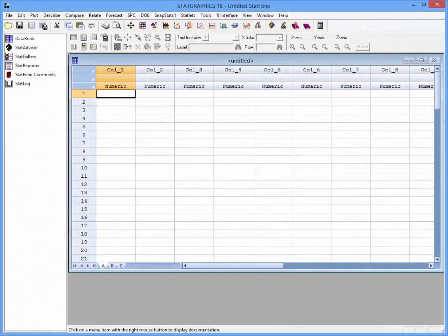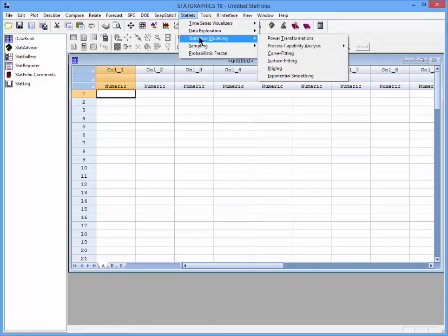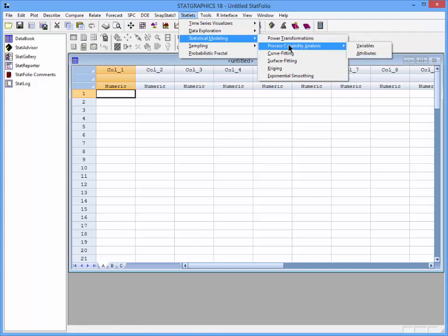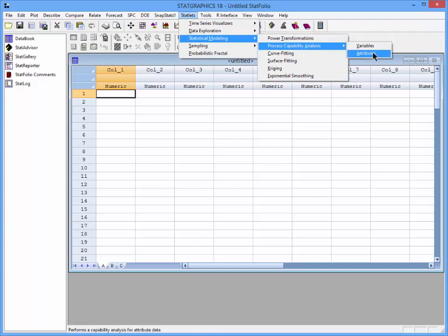To perform the calculations, I've loaded StatGraphics 18. I'll now go to the top menu and select Statlets, Statistical Modeling, Process Capability Analysis, Attributes.